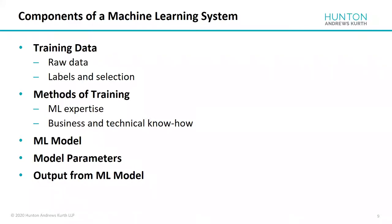As we go through and talk about legal issues, it's important to keep track of the main components of a machine learning system. In order to understand and negotiate contracts and protect your company's rights, you need to know exactly what the components are. The training data is a key component because that's where the value comes from. There's a distinction between raw data — which is not labeled and not cleaned — and labeled, cleaned data. There's an awful lot of value in providing labels to the training data, selecting certain data elements that are successful in predicting outcomes, normalizing the data, and correcting errors. There's work and know-how that goes into that.